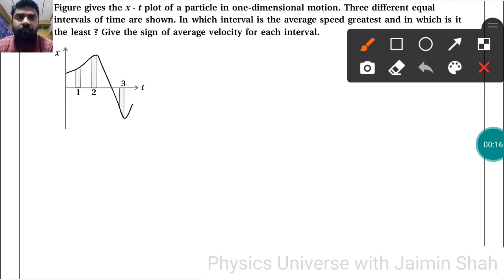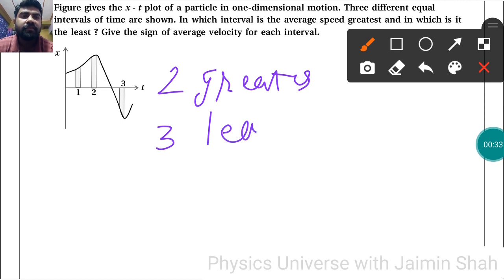First of all, which is greatest? The second interval has the greatest average speed, and the third is the least. For the signs, intervals 1 and 2 have positive average velocity.